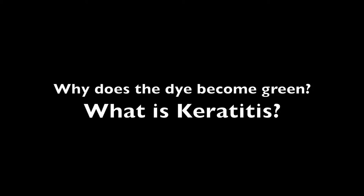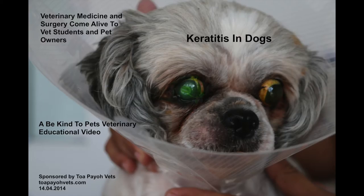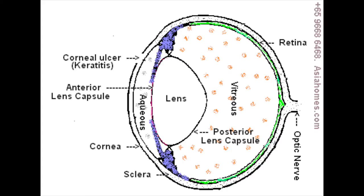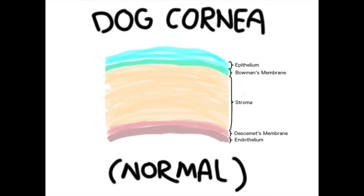Why does the dye become green? What is keratitis? This is a Be Kind to Pet veterinary educational video brought to you by Tobio Vance. As you can see from this diagram of an eye, the transparent front of the eye is the cornea. The cornea is made of five main layers: the epithelium on top, followed by Bowman's membrane, followed by the thick stroma, followed by Descemet's membrane, and finally the one-cell-thick endothelium.